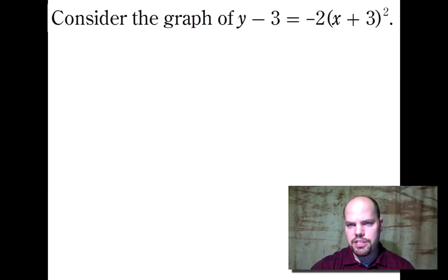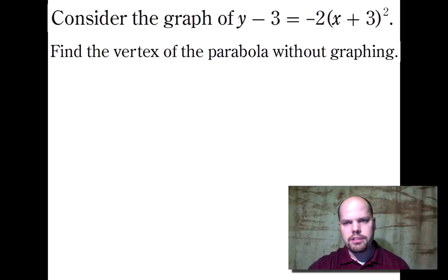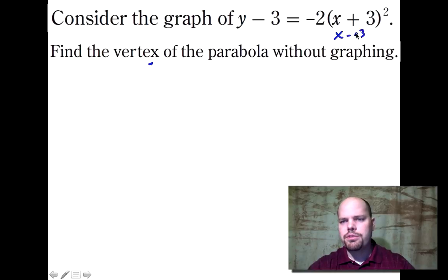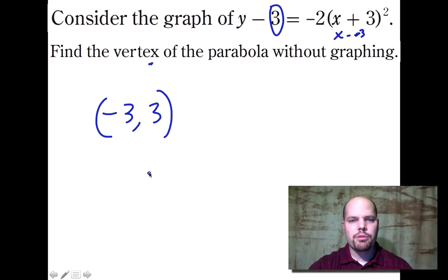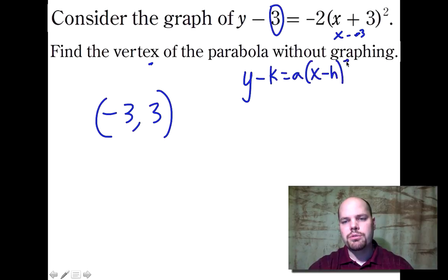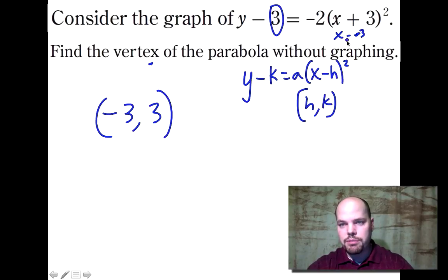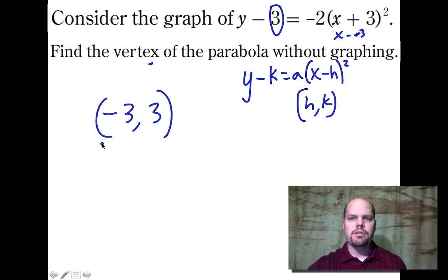Consider the graph of y minus three equals negative two times the quantity x plus three, quantity squared. Find the vertex without graphing. The x plus three is normally written as x minus negative three, so the x value of the vertex is negative three. And y minus three means k is three. So the vertex is at (-3, 3), because y minus k equals a times the quantity x minus h squared gives a vertex at h and k.